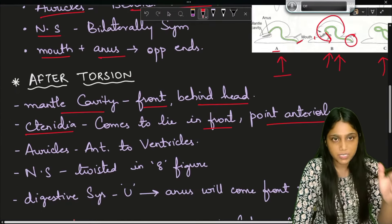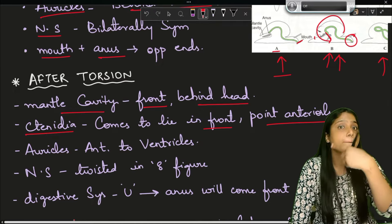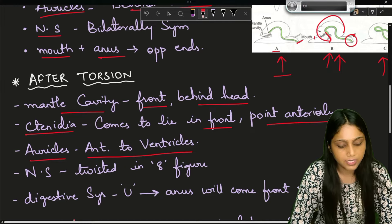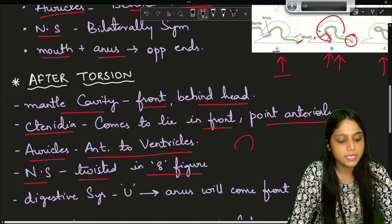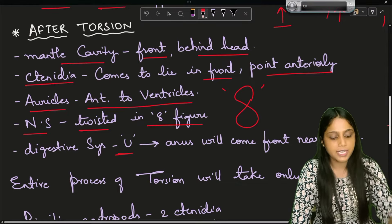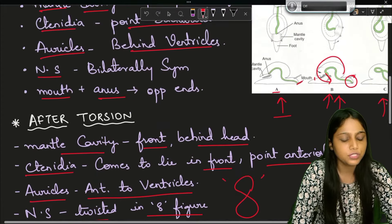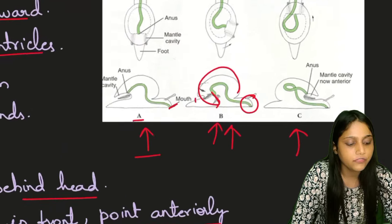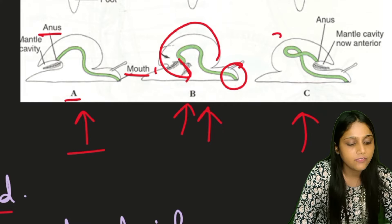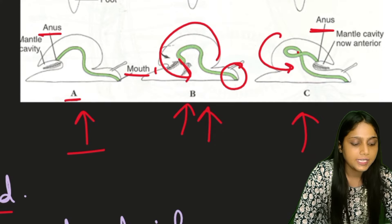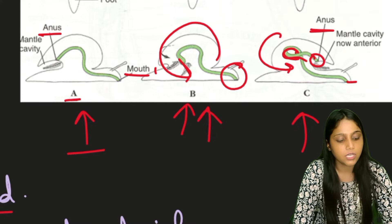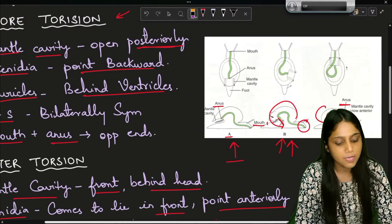After torsion, the auricles are found anterior to the ventricles. The nervous system gets twisted in the form of a figure-eight. The digestive system takes a U-turn shape, and the anus comes from the posterior end to near the mouth. So after torsion, the anus opens at the anterior end near the mouth. These are the changes before and after torsion.